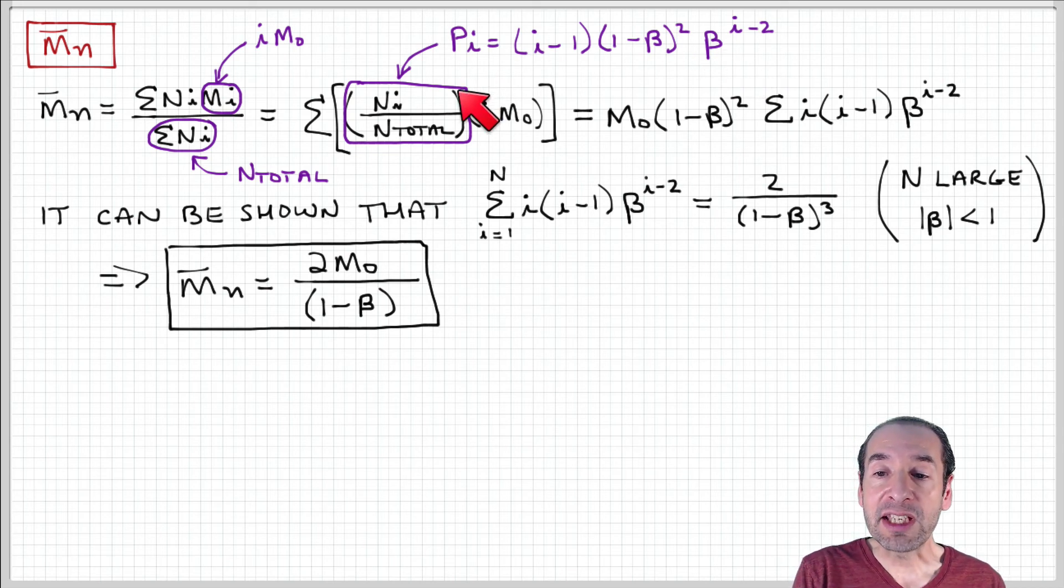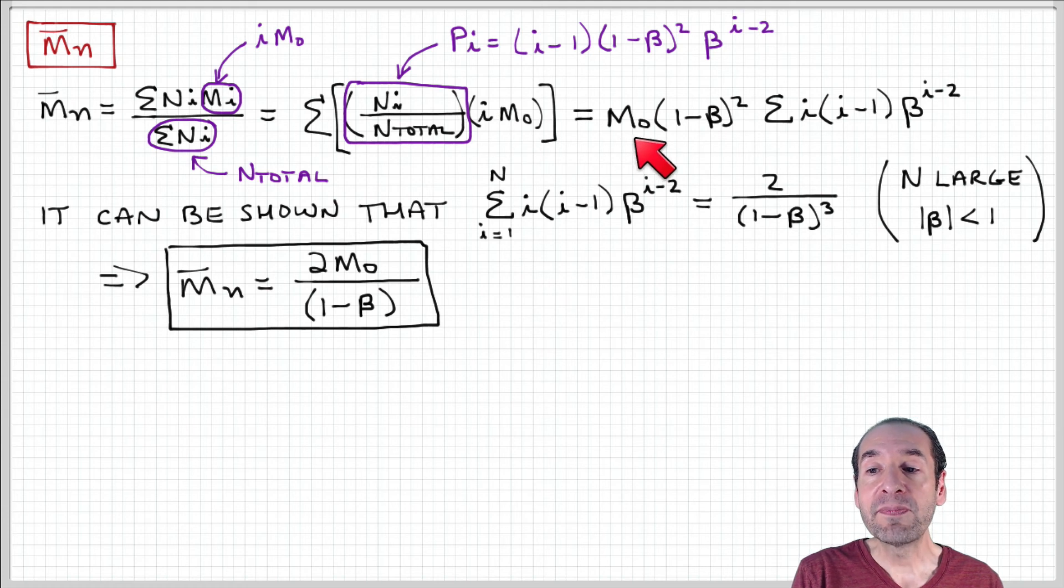So I can substitute this in, combine terms, and I'll factor out the terms that don't depend on i. I'm summing over i. So I have m-not, the monomer molecular weight, times 1 minus beta squared, times the sum over i of i times i minus 1 times beta to the i minus 2.